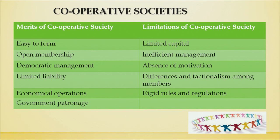Differences and factionalism among members can also be a limitation. The last limitation is rigid rules and regulations — although forming a cooperative society does not require many legalities, operating one is bound by rigid rules. For example, cooperative societies must get their financial statements audited by both internal and external auditors.